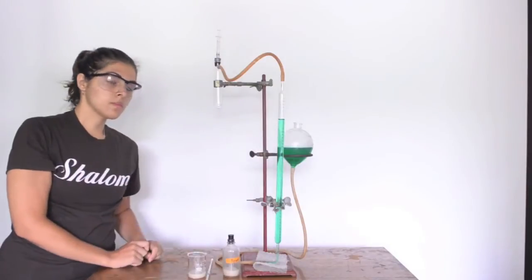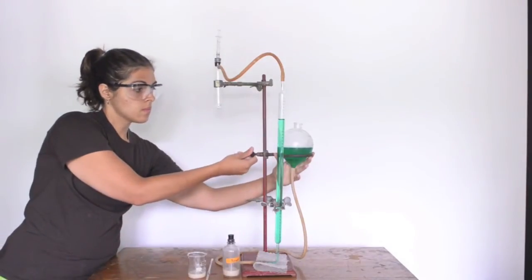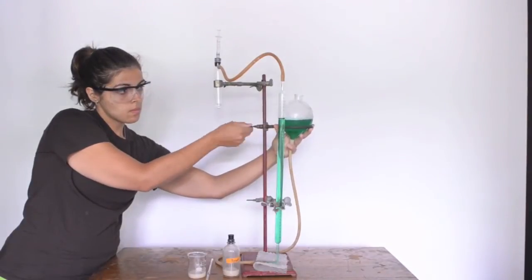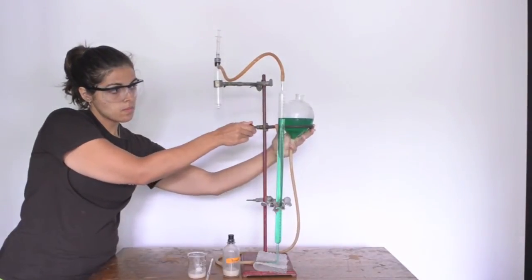Once you have determined the system is airtight, move the leveling bulb so that the liquid level equals that of the liquid level in the burette. We'll have more to say about how to fix systems with air leaks in a second.